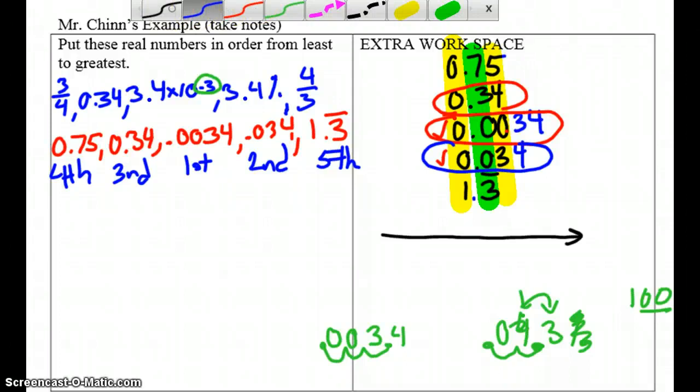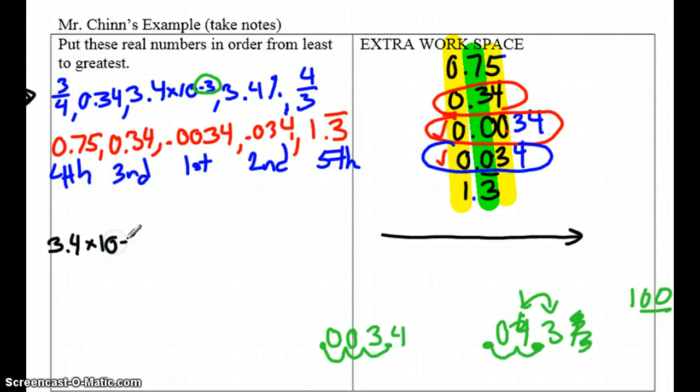So, to finish this problem off, we are going to rewrite the terms in order. But come back up here to the top with the original terms, because this is just our work. So the first number was 0.0034, which was the scientific notation. So we will write that first for the smallest. And let's get rid of that so we don't look at that again.